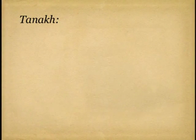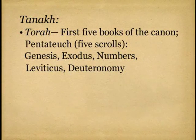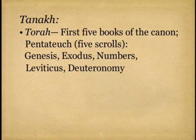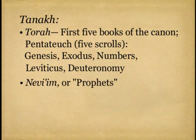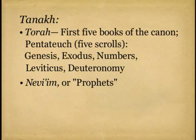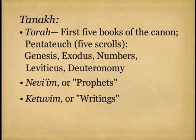One term often used to refer to these works is Tanakh — an acronym for the three sections that comprise the canon in the traditional Jewish division. The first section, the Torah, gives us the T of Tanakh, and consists of the first five books of the canon, also called the Pentateuch from a Greek term meaning five scrolls: Genesis, Exodus, Numbers, Leviticus, and Deuteronomy. The next section is the Nevi'im, or prophets, giving us the N of Tanakh. The final section is the Ketuvim, or writings — everything not defined as either Torah or prophets — and that's where the K of Tanakh comes in.